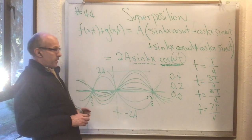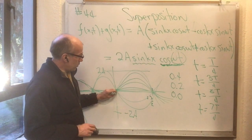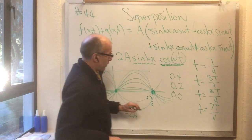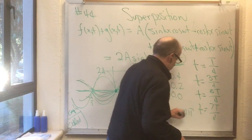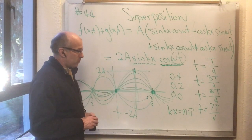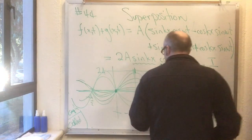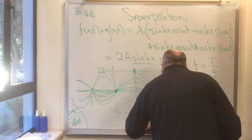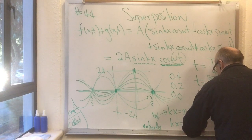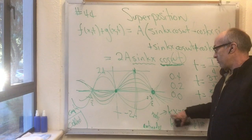Points that are always zero are called nodes, and they occur when kx equals a multiple of π, i.e., kx = nπ. Points that oscillate most wildly, halfway between nodes, are called antinodes, located where kx = (n + ½)π. You can solve these for x, or if node positions are given, you can find k.